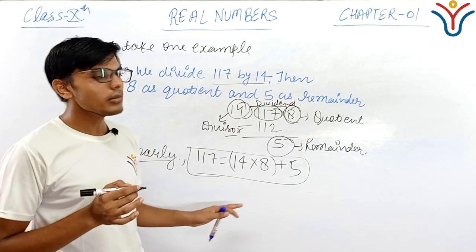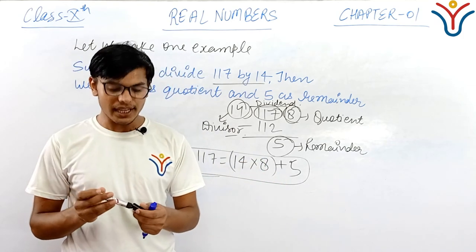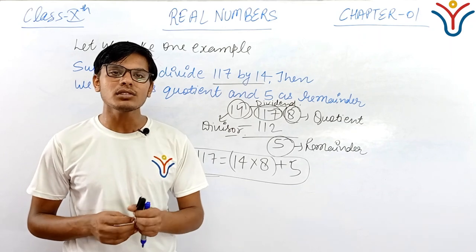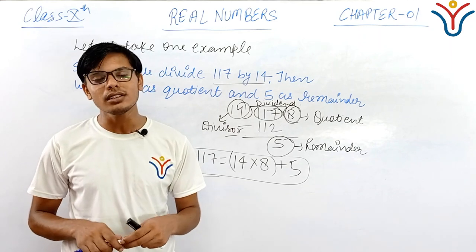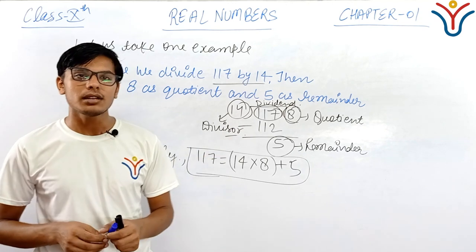It is the basic theorem of real numbers, Euclid's division algorithm, which is based on exercise 1.1. All the questions related to exercise 1.1 are fully covered through this algorithm or through this principle.